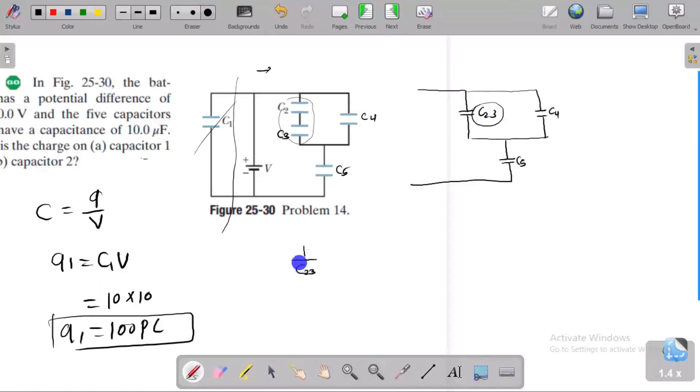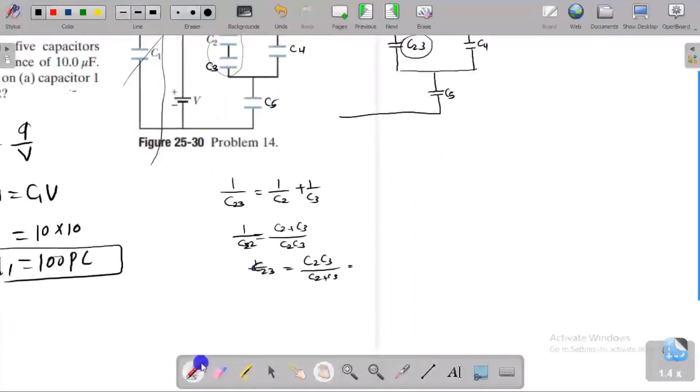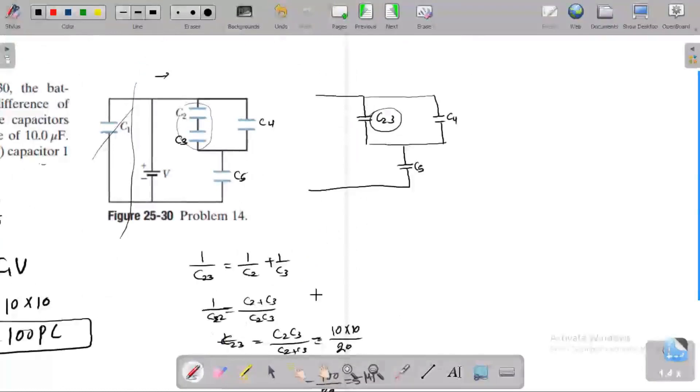For series combination: 1 by C2,C3 equals 1 by C2 plus 1 by C3, which equals C2 plus C3 divided by C2 times C3. So C2,C3 equals C2 times C3 divided by C2 plus C3. Each has 10 microfarads, so 10 times 10 divided by 20 equals 100 by 20, which gives 5 microfarads. So C2,C3 value is 5 microfarads.